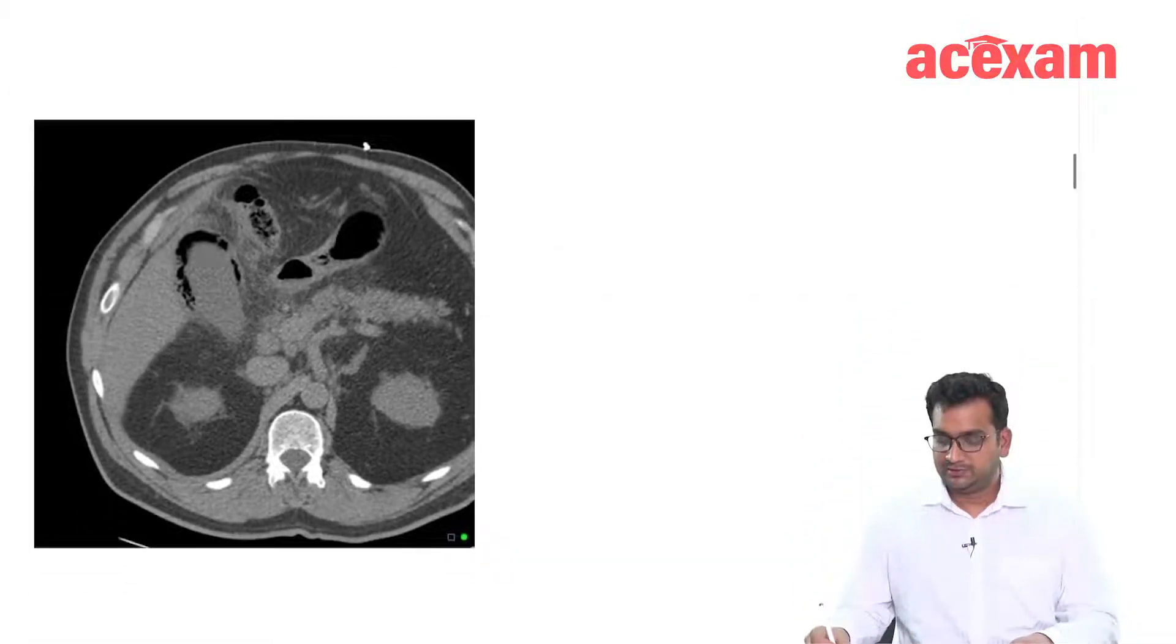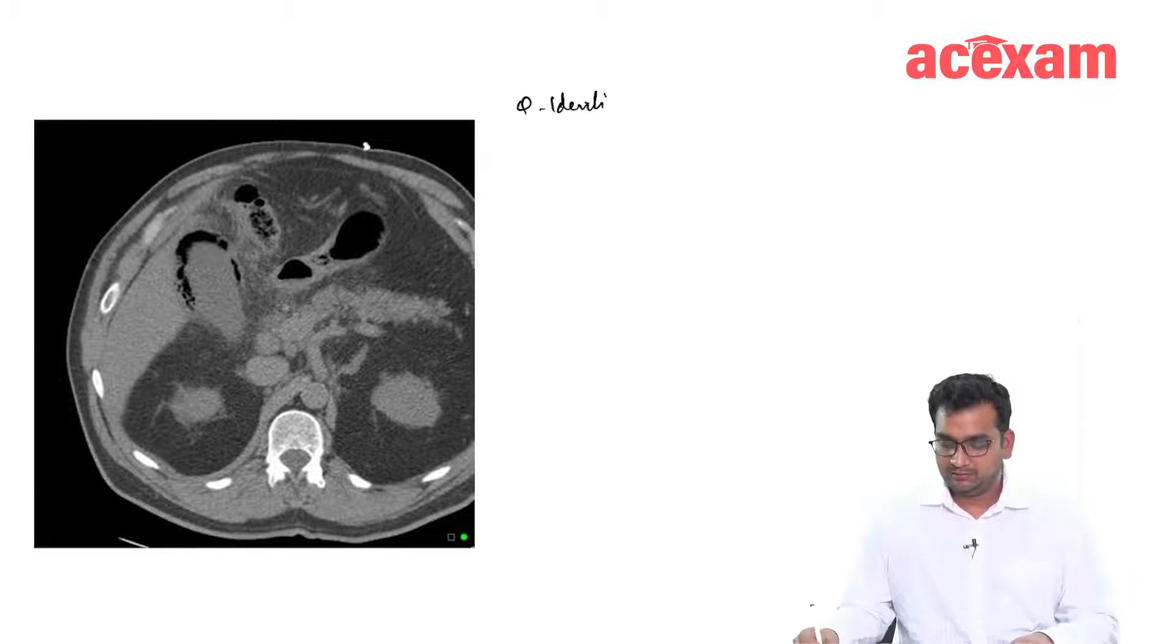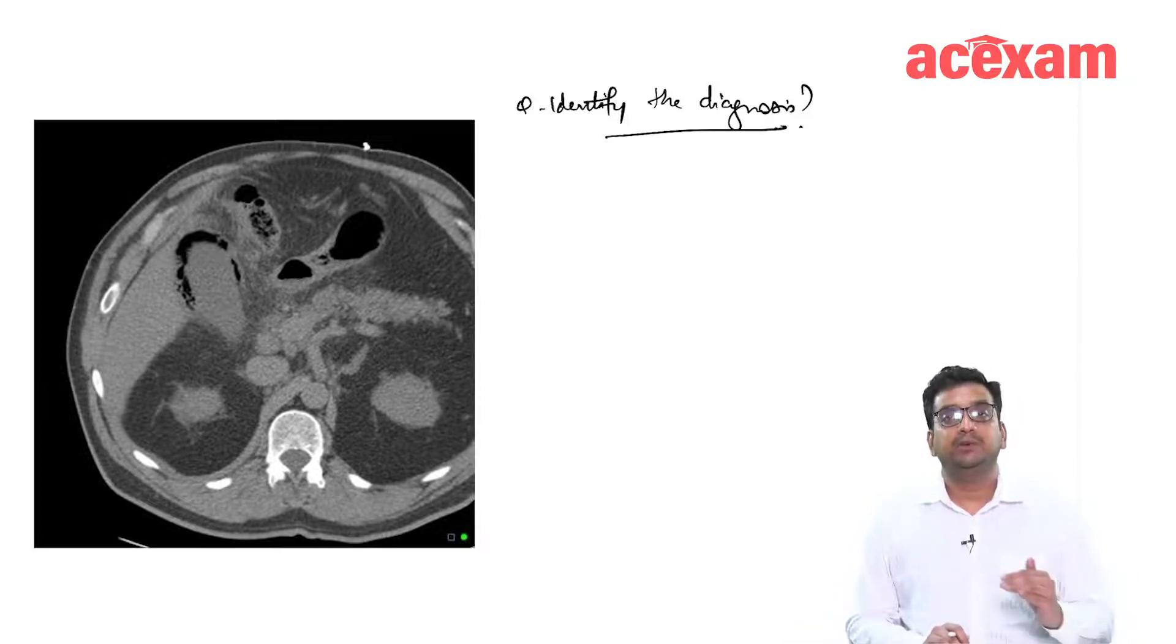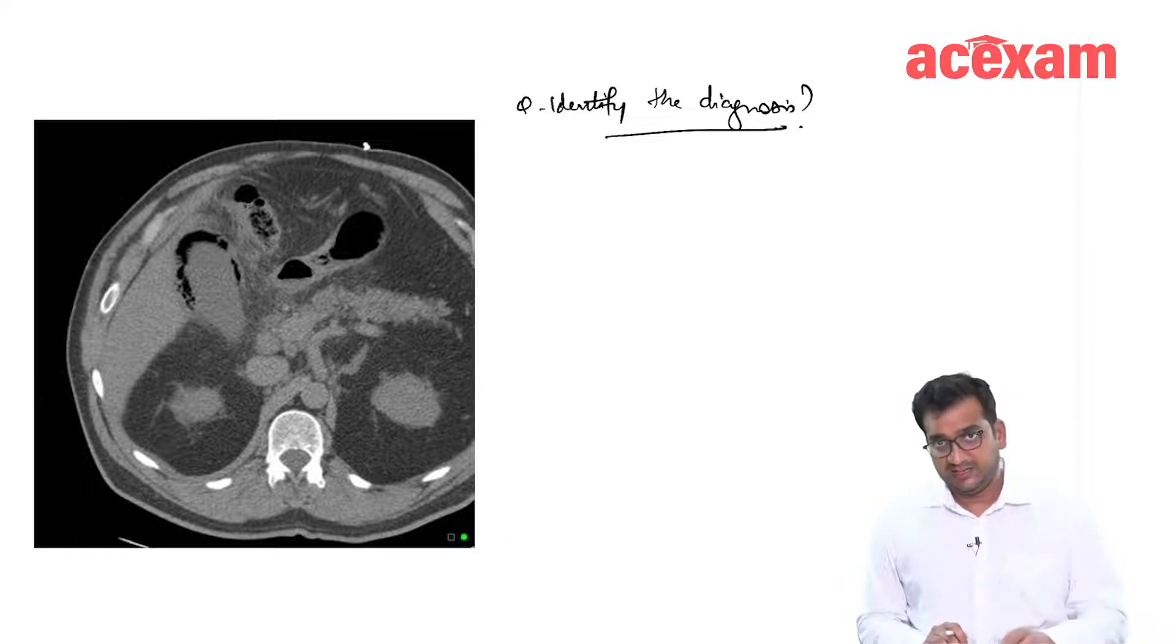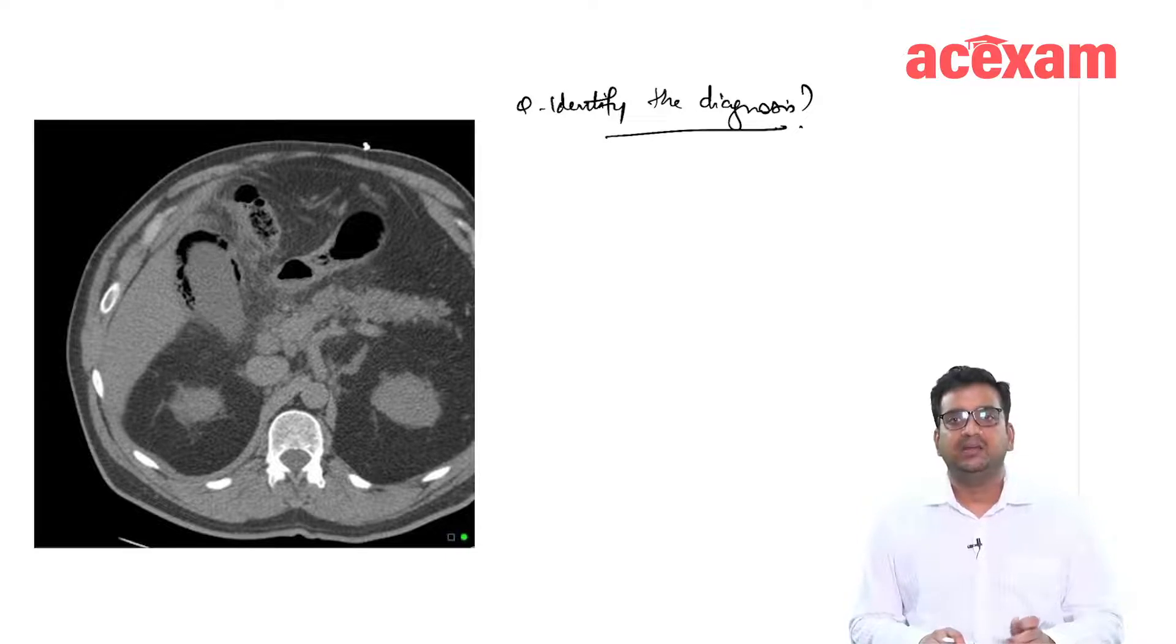Identify the diagnosis. A patient presents with complaints of abdominal pain and fever to the emergency department. On abdominal examination, there is tenderness in the right hypochondrium. A provisional diagnosis of acute cholecystitis was made and a CT scan was obtained.